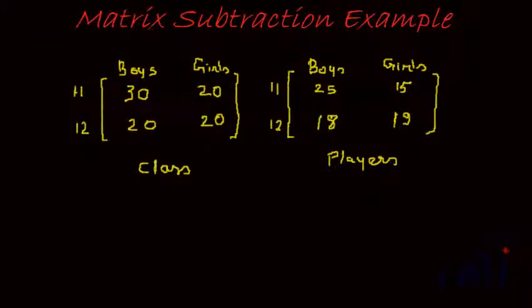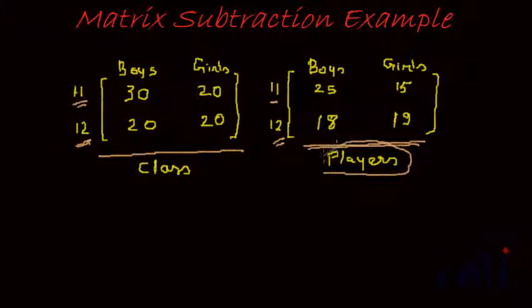Now consider this example. We are given two matrices. Matrix 1, the one which I have underlined, gives the number of boys and girls in class 11 and 12 in a school. And matrix B, the second one, gives the number of boys and girls in class 11 and 12 who play a sport, who are part of a school team of some games.